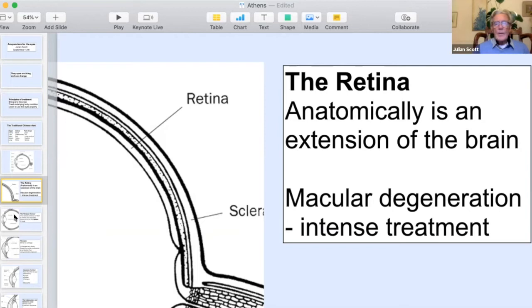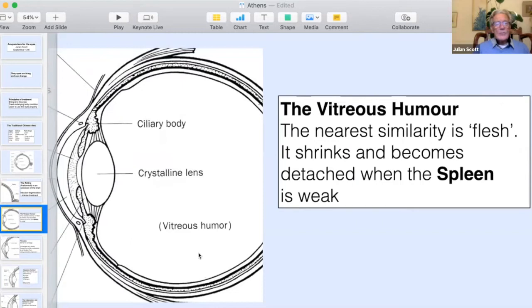Then, going inwards, you've got the vitreous humor. This is a sort of glass jelly substance which fills the majority of the eye. And its nearest body equivalent is flesh. If you think of flabby bits of flesh. And as the spleen declines, the condition of spleen and kidney weakness. With old age, all the muscles on the leg and in the arm, they all tend to become flabby. They shrink and become flabby. And that's what happens, one of the conditions of the vitreous humor. It shrinks and detaches. And the best way to avoid that, and the best way to support it, is tonifying the spleen.